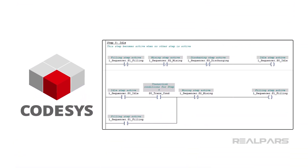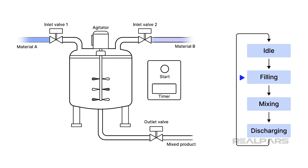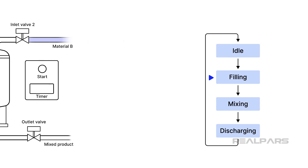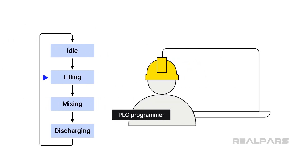In this course, you will learn how to write a basic sequencer using the Ladder Diagram programming language. A sequencer is a piece of software that manages the execution of a sequential process. The main function of a sequencer is to keep track of the current step being executed in a sequential process and to transition to the next step when a step is complete. You will encounter sequencers very often in your career as a PLC programmer, so it's important that you learn how to design, program, and test sequencers.